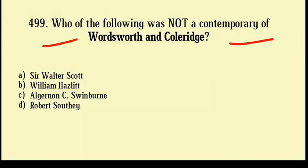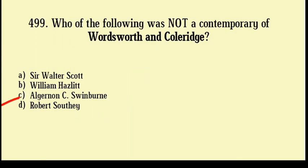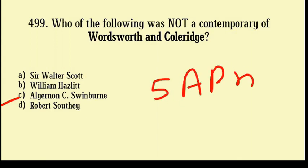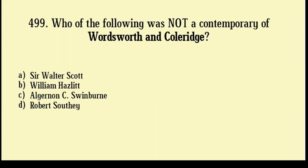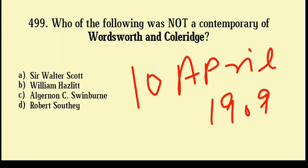Who of the following is not a contemporary of Wordsworth and Coleridge? Sir Walter Scott, William Hazlitt, Algernon Swinburney, Robert Southey. Correct answer: Option number C, Algernon C. Swinburney, born 5th April 1837 and died 10th April 1909. He was an English poet, playwright, novelist, and critic.